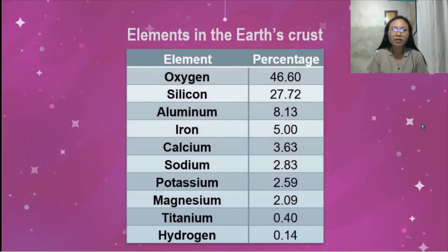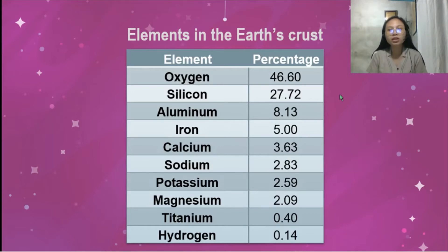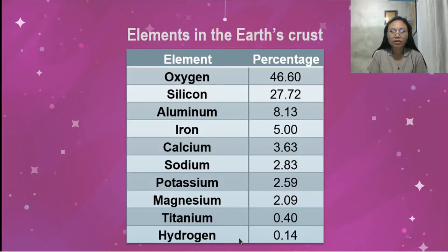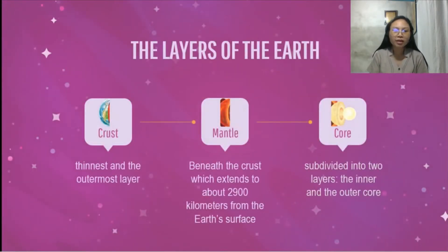The elements in the earth's crust include oxygen, silicon, aluminum, iron, calcium, sodium, potassium, magnesium, titanium, and hydrogen. Based on this table, oxygen is the most abundant element in the earth's crust, having a percentage of 46.60%, while hydrogen has the least at 0.14%. That's it for the crust.